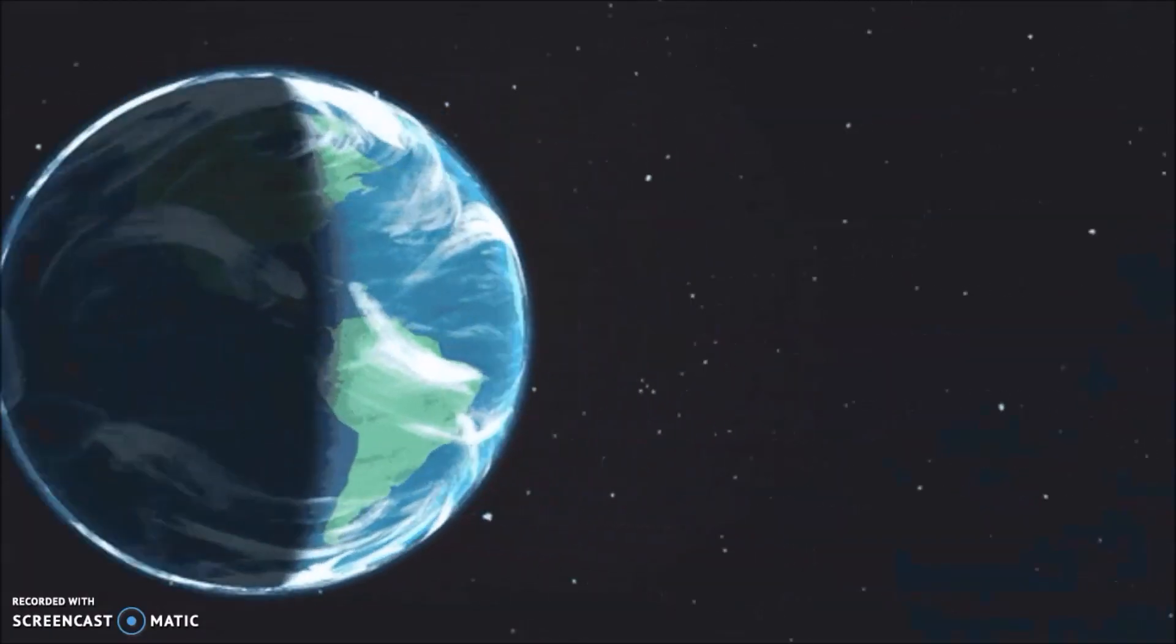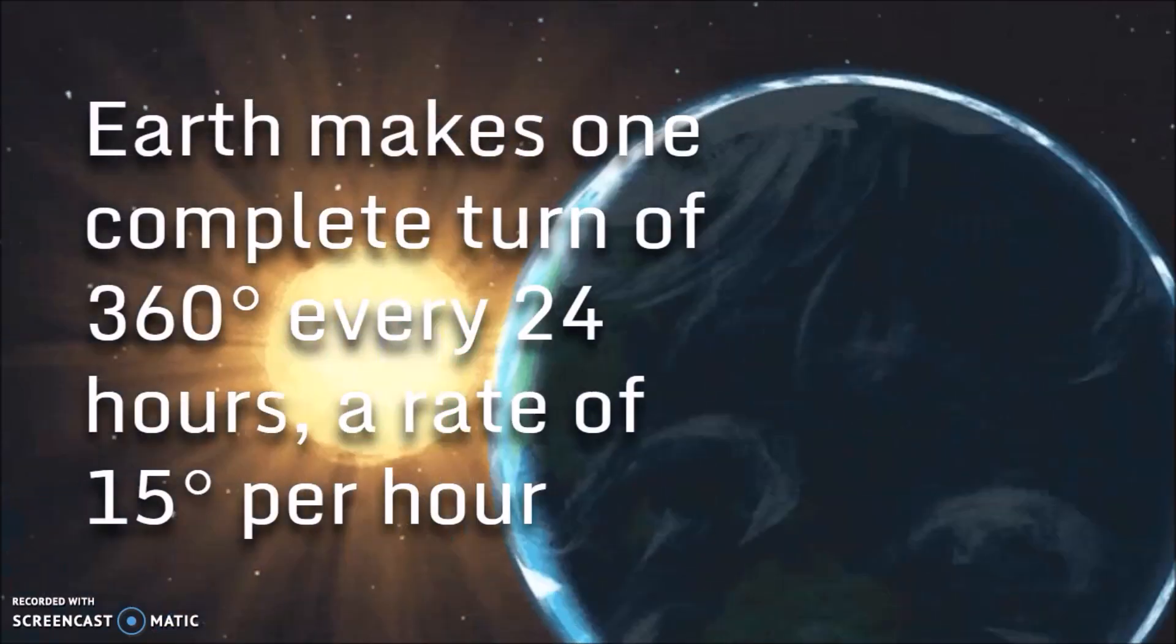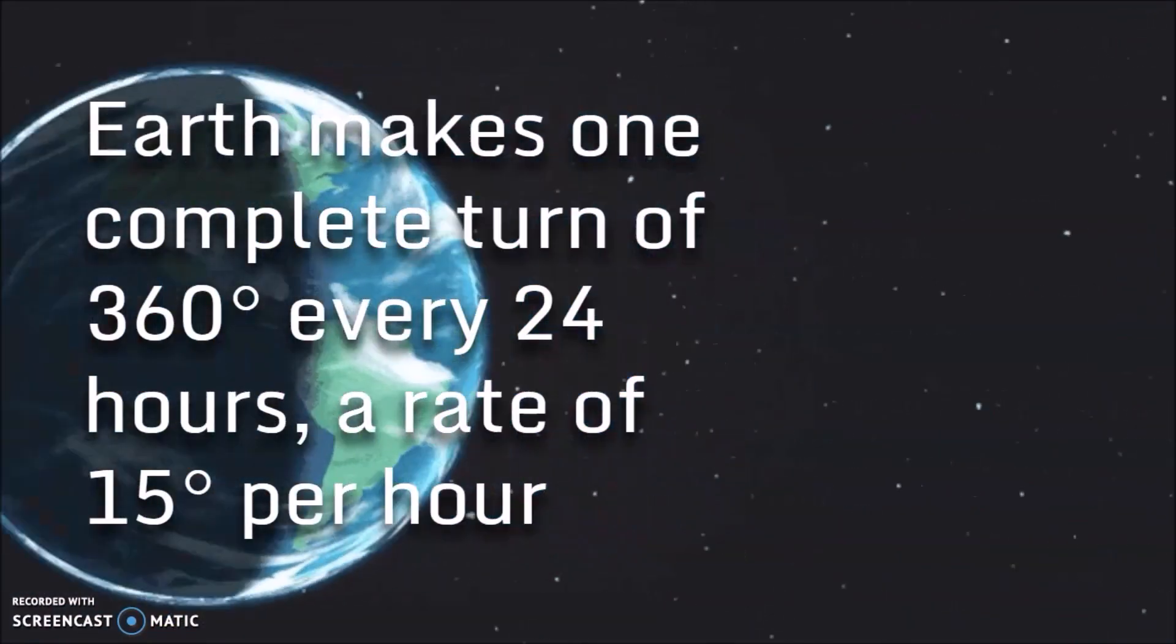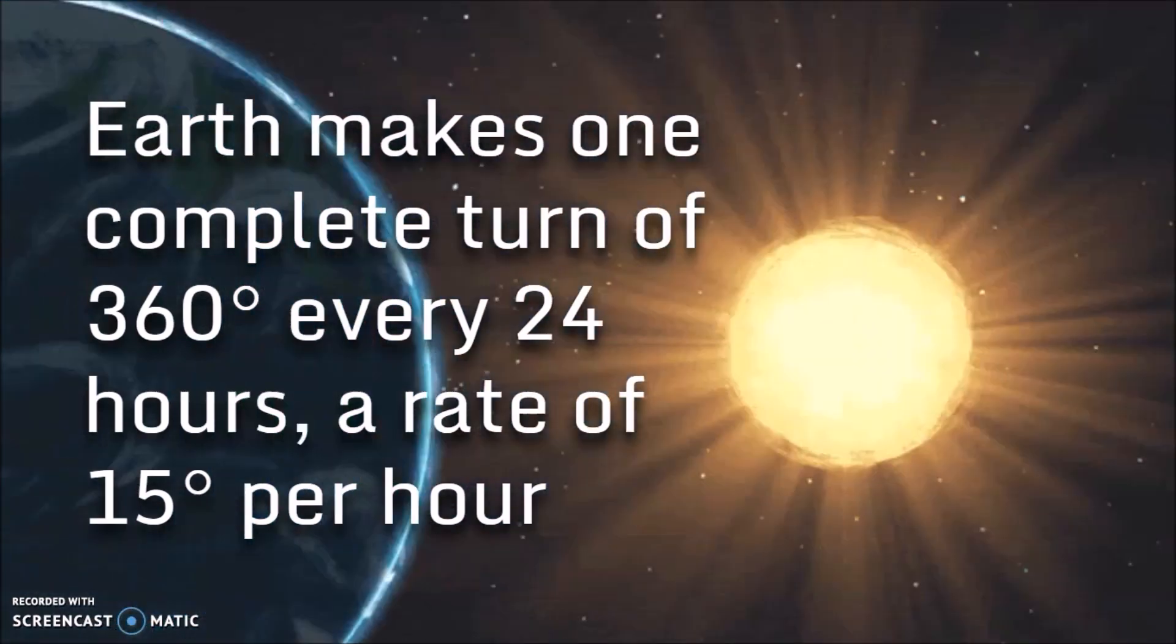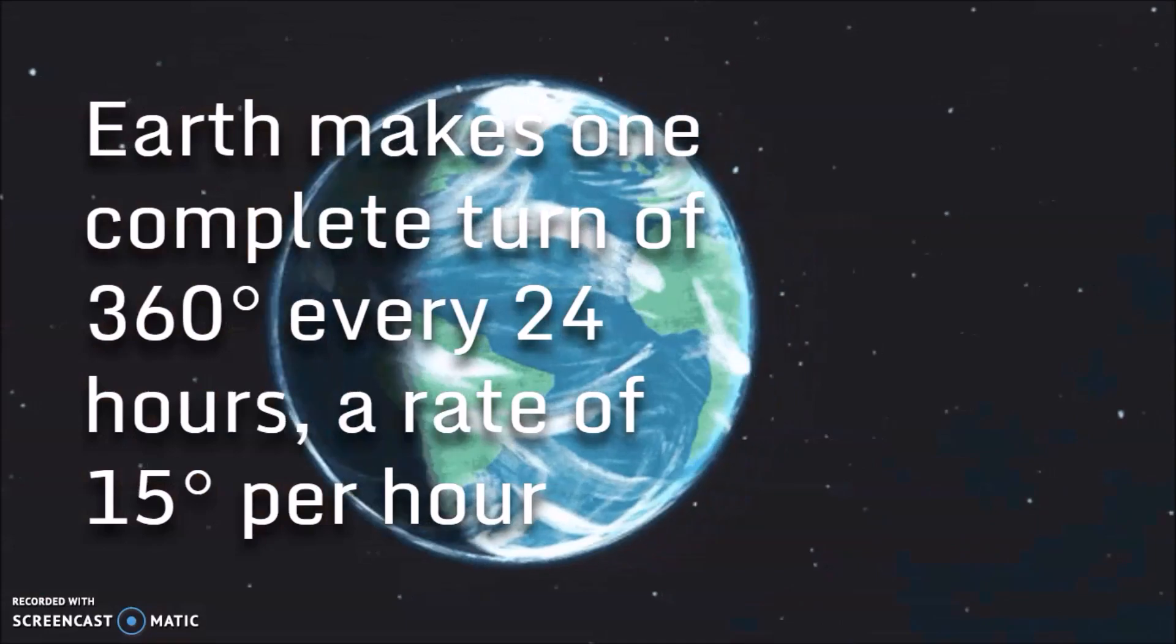So how long does it take for Earth to make one complete rotation? Earth makes one complete turn of 360 degrees every 24 hours. So if you divide 360 by 24, we get a rate of 15 degrees per hour.